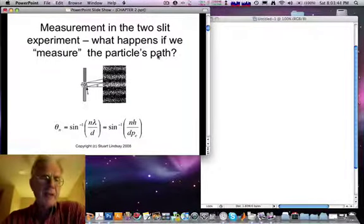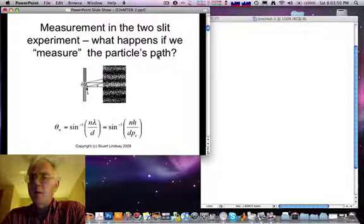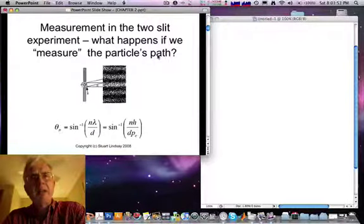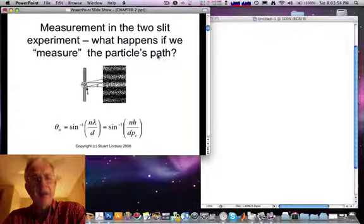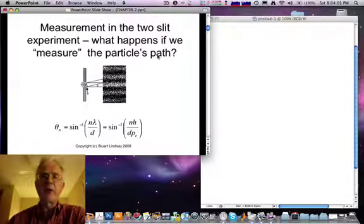So one way to see how this wave-like behavior comes from problems associated with measurement itself is to ask what would happen if we tried to tell which side of the beam splitter the electron was passing through in that two-slit electron diffraction experiment.